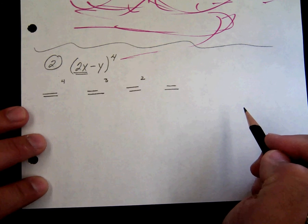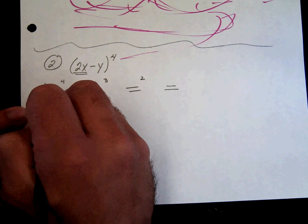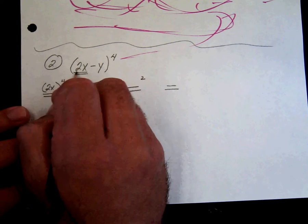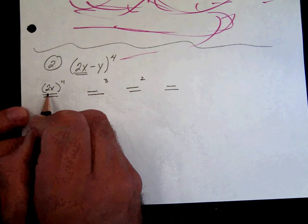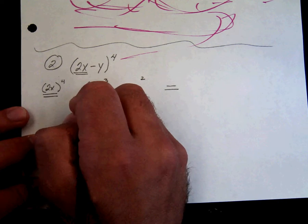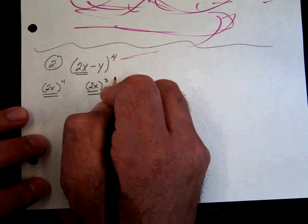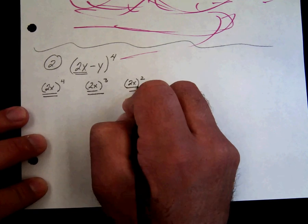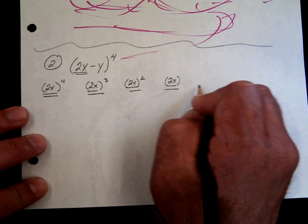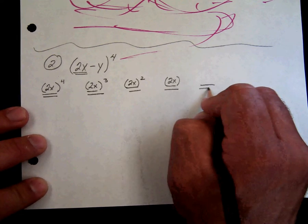Well, what is double underlined? 2x. And if it's more than just a letter, put it in parentheses. 2x to the fourth, 2x cubed, 2x squared, 2x, and then it's gone in the last term. There's nothing there.